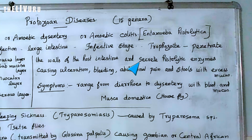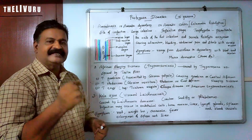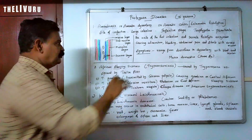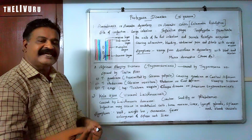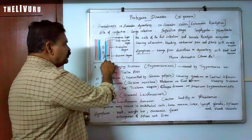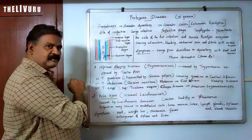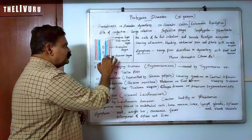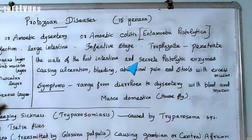The trophozoite secretes histolytic enzymes. Histology is the study of tissue, and histolytic enzymes break down tissue. These enzymes cause ulceration of the colon wall, meaning they cause wounds or sores. It secretes histolytic enzymes causing ulceration.